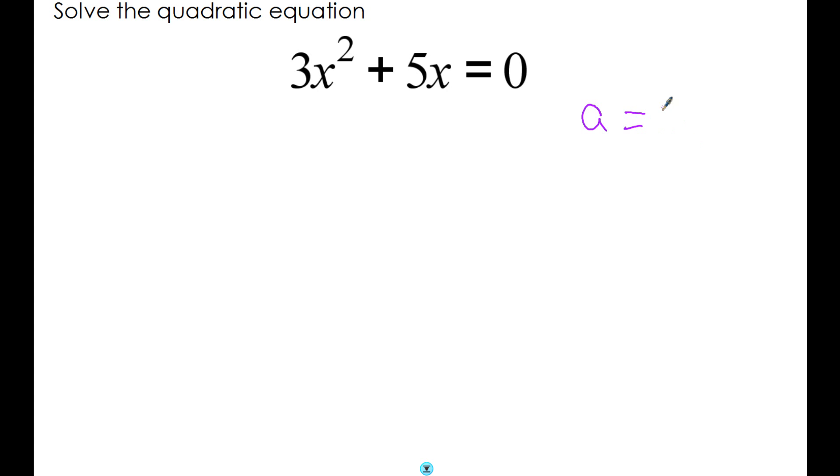We just need to put down that a is 3, b is 5. For c, we just say c is 0, and we still substitute that into the quadratic formula.